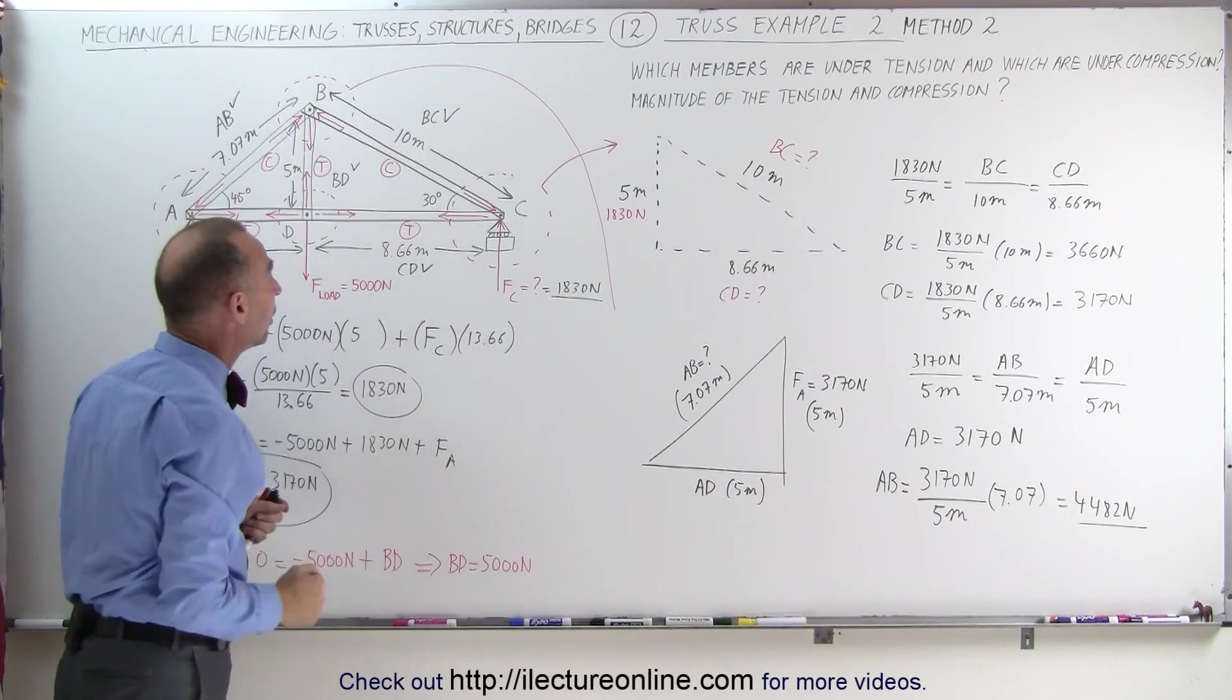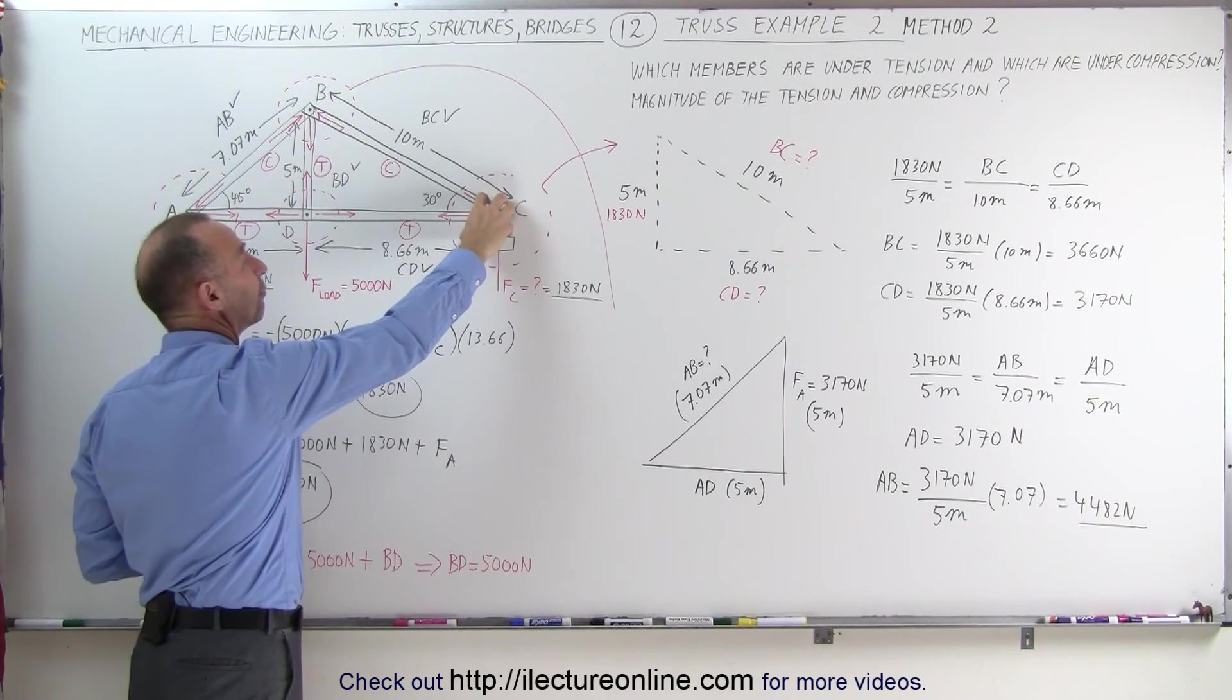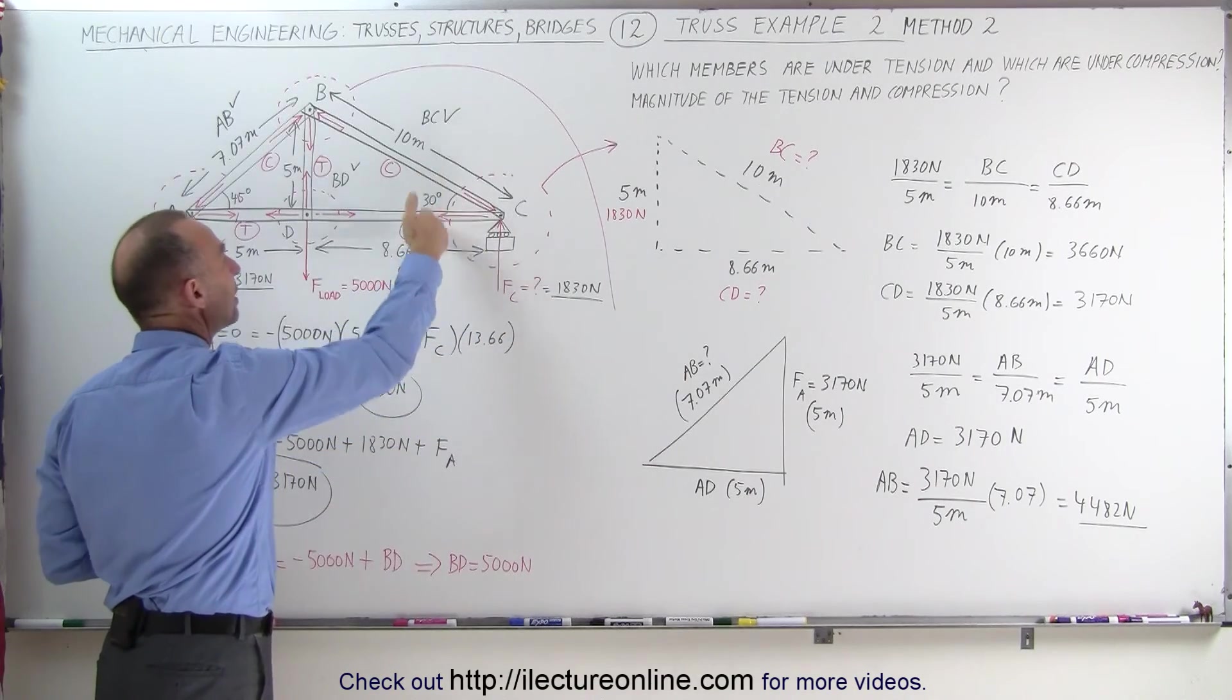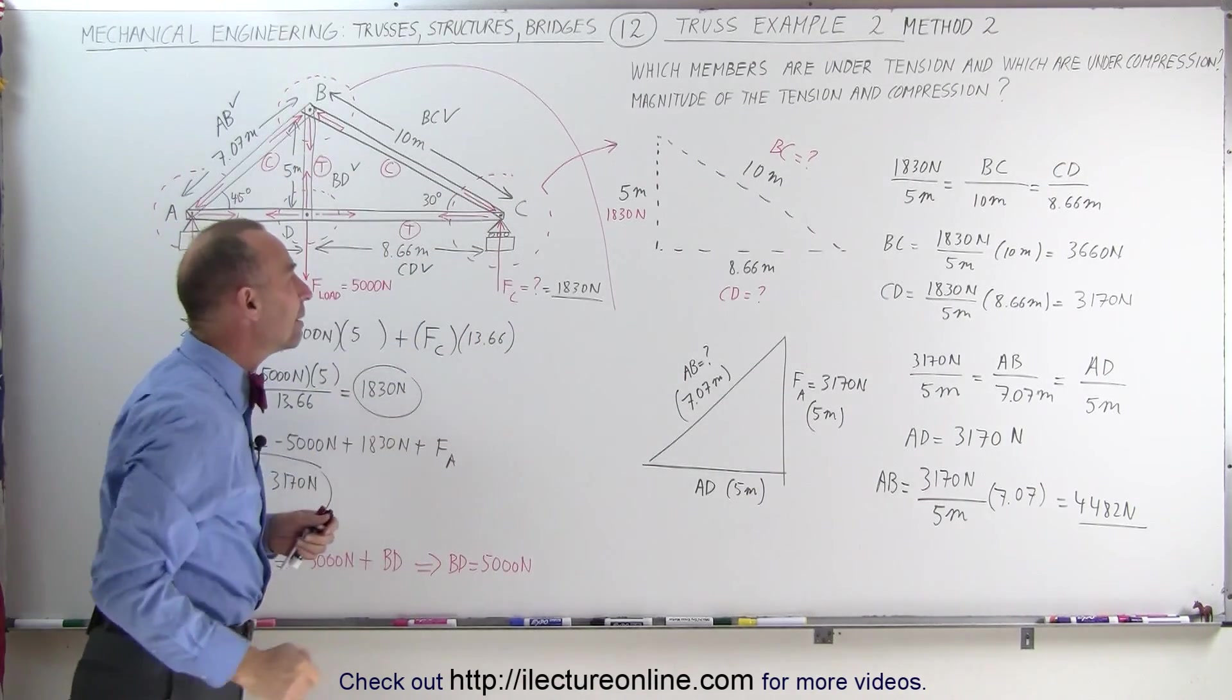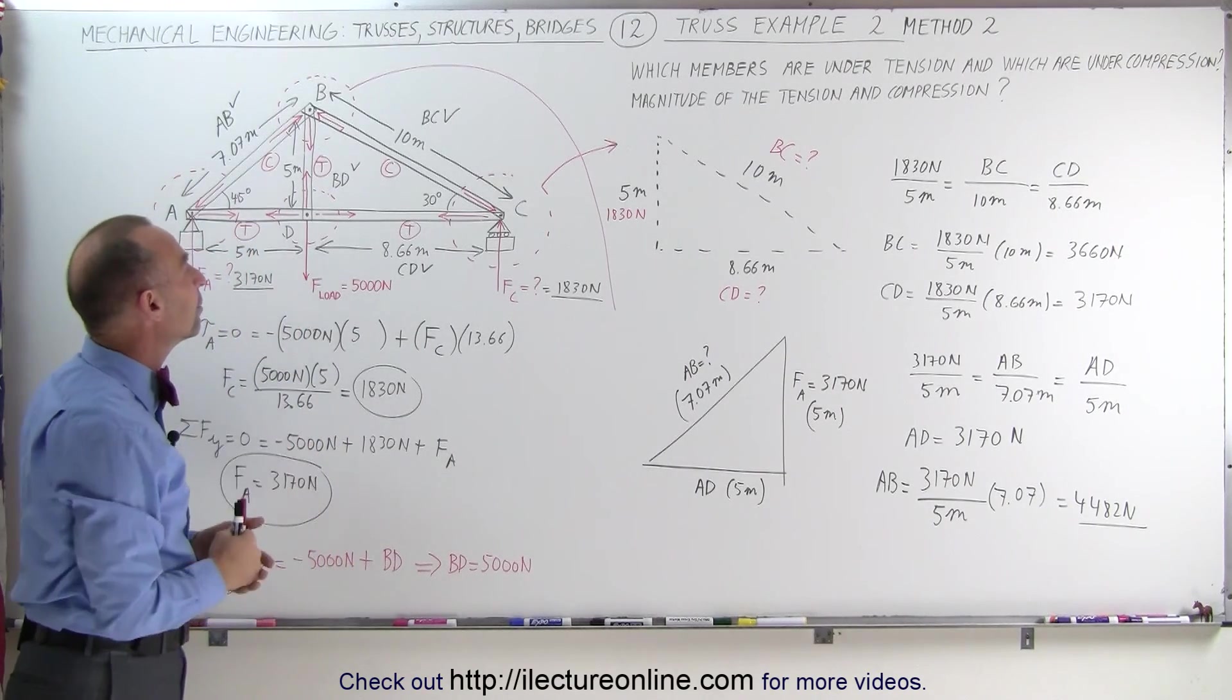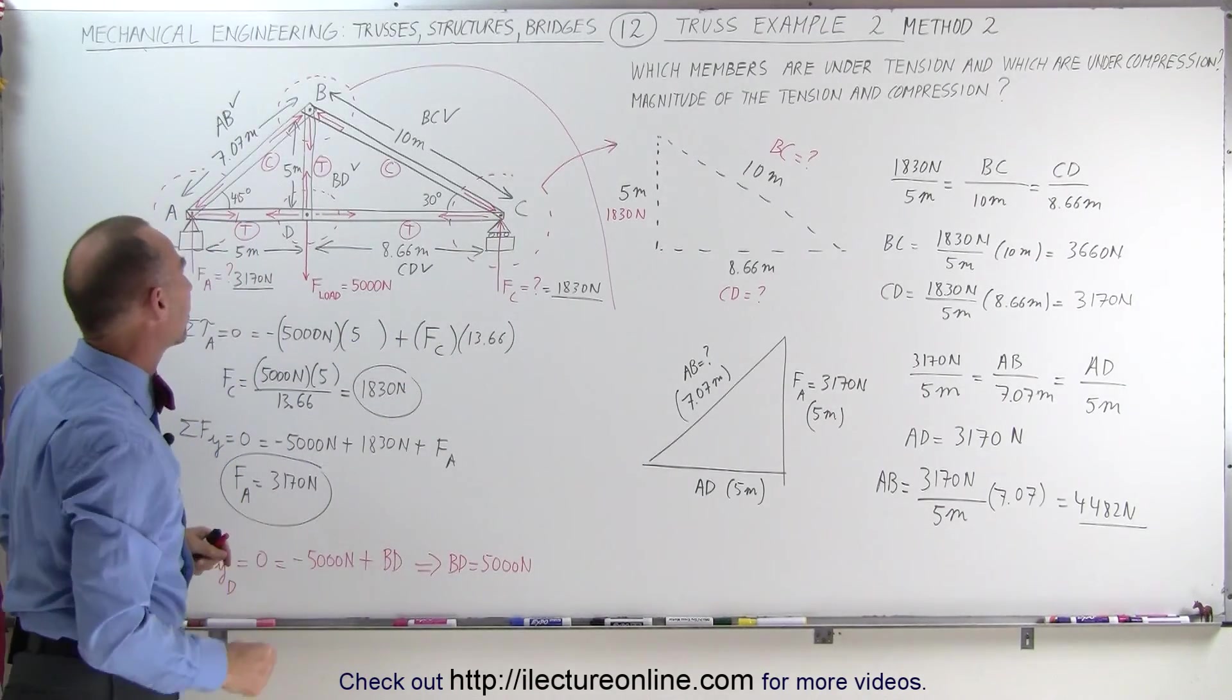Notice how nice it is if you know the lengths of the members and you recognize the shape of a right angle triangle, you can represent the sum of the forces at the joint as being equivalent or in ratio to the length of the beam. So the magnitude of forces can be made equivalent to the length of the beam associated with that particular corner.